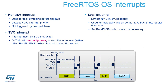Finally, the PendSV interrupt is used for the actual task switch. It is typically called from SysTick and is also set by RTOS API functions to guarantee a context switch whenever the state of a task changes — for example, when entering a blocking state or a ready state.